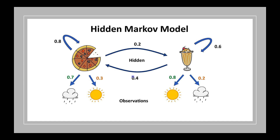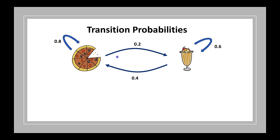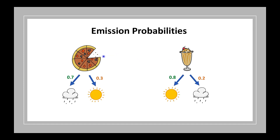So what we have here is a Hidden Markov Model. It has two types of states: observation states and hidden states. Observation states are states that you can see — DK observes the weather. Foods are called hidden states because DK doesn't get to know what Katie wants directly. These transition numbers are called transition probability, the probability of going from one hidden state to another. And these numbers are called emission probability — the probability that observations are emitted from hidden states: 70% and 30%, and 80% and 20%.